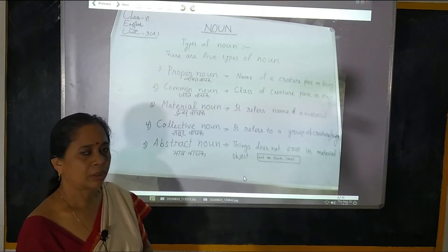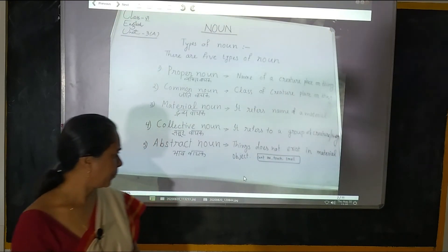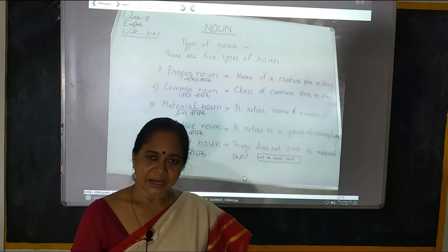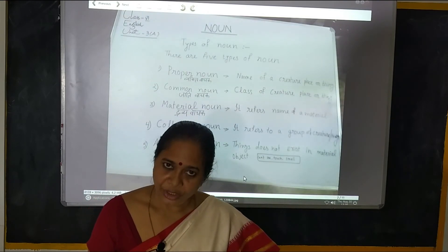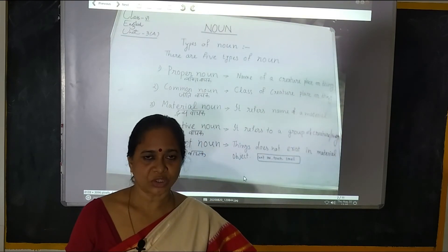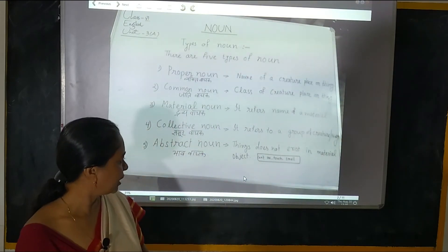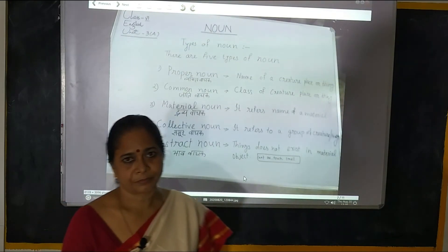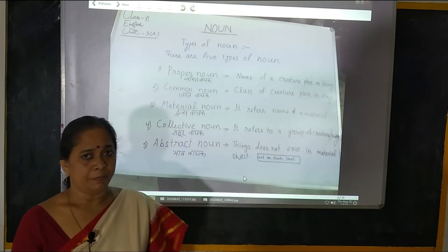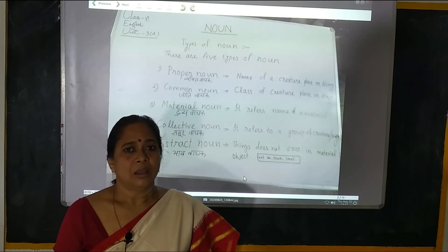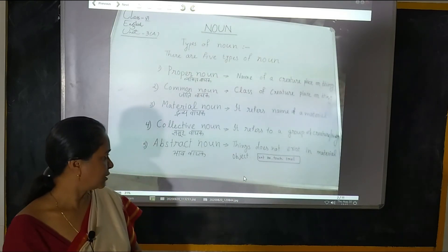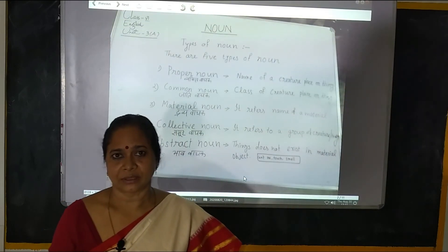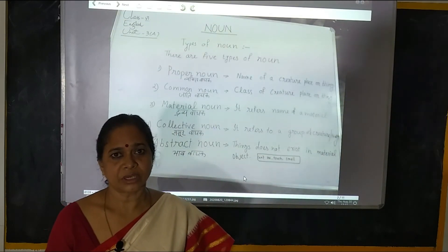Abstract Noun — bhav vachat sanjya. Yeh sanjya niraakar hai. Inka astitva koi material object mein nahi hai. Ise ham mehsoos kar sakte hain. Things do not exist as material objects — ise hum apni anubhav dwara mehsoos kar sakte hain, dekh nahi sakte, chhul nahi sakte, soong nahi sakte.